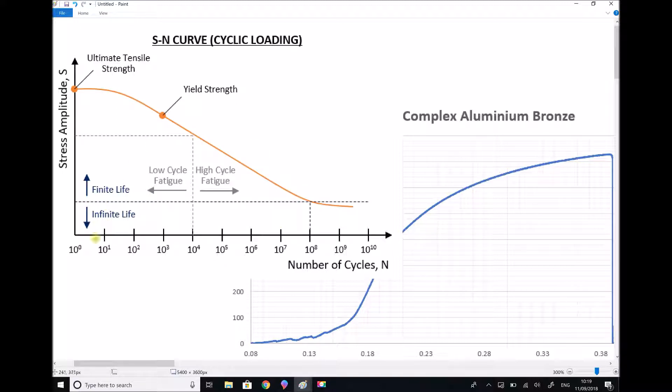On our graph in the top left hand corner we see that the x-axis is labeled as number of cycles and this is a logarithmic scale. We've got 10 to the 0 which is 1, 10 to the 1 which is 10, 10 squared is 100, 1000, 10,000, 100,000 and so on. So that's the number of cycles of loading and unloading.